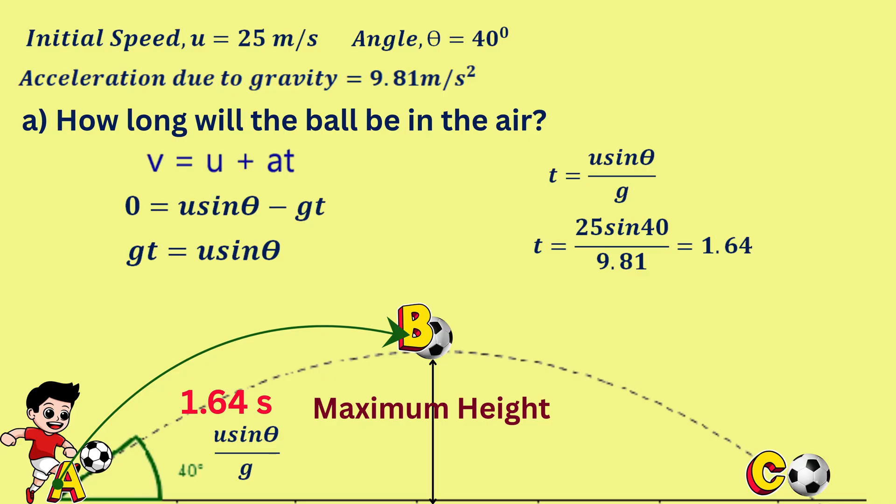That means it will take the same amount of time to fall from point B to point C. So the total time the ball spent in the air is 2 times 1.64, which is 3.28 seconds in total.